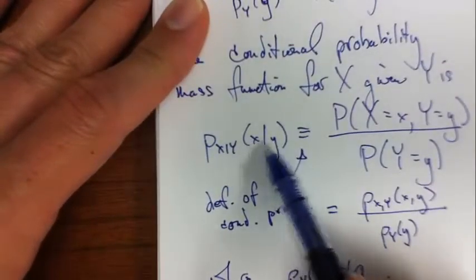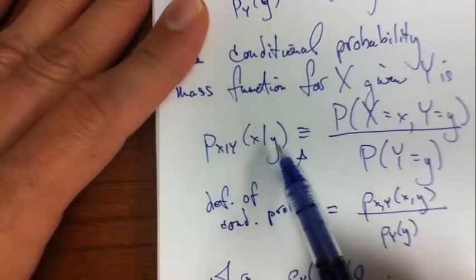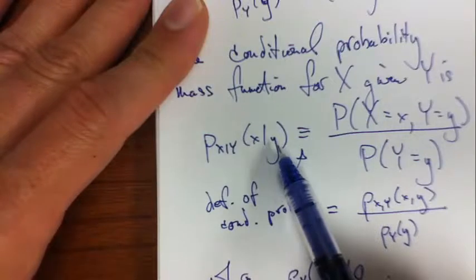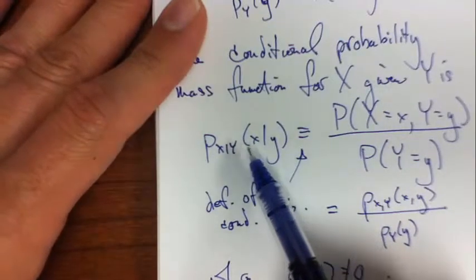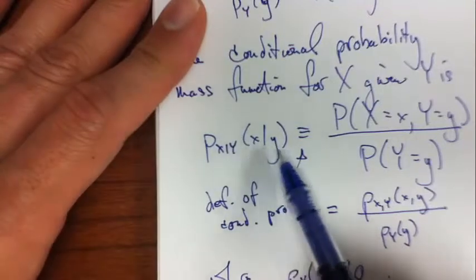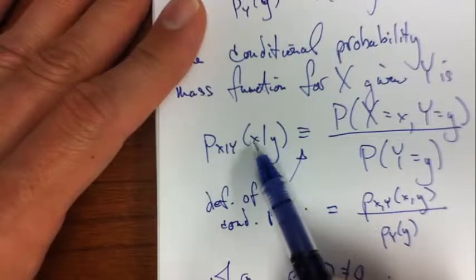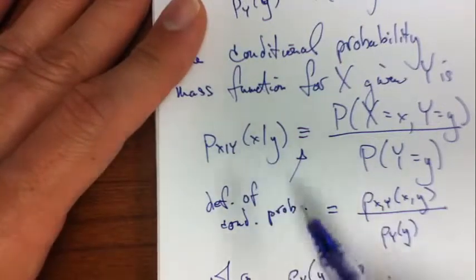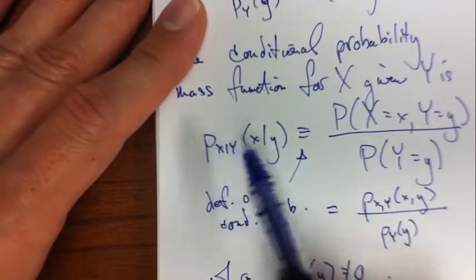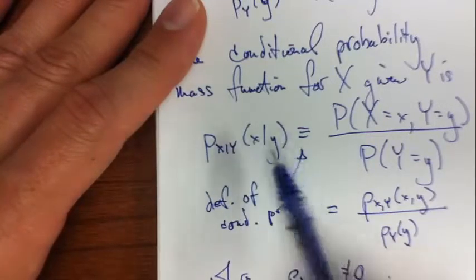Note, while we're looking at these, that the numerator here is actually a function of little x and little y, and the denominator is a function of little y. This whole thing is a function of x and y. So, I can actually change these values.